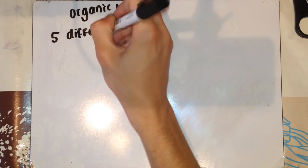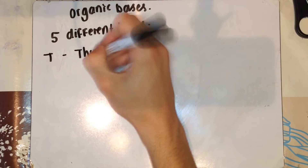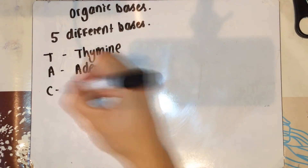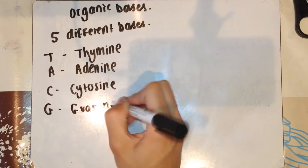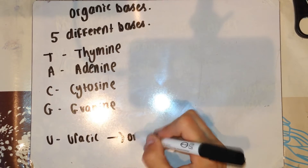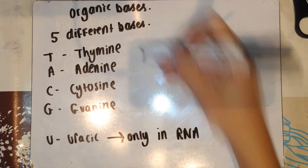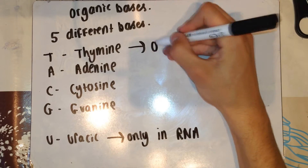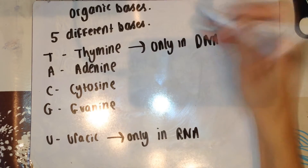There are five different types of organic base: thymine, adenine, cytosine, guanine, and uracil. Uracil is only found in RNA. Thymine is only found in DNA.